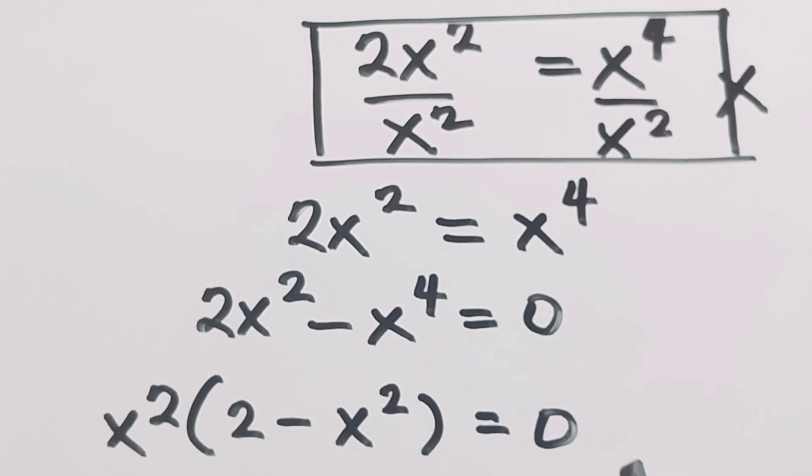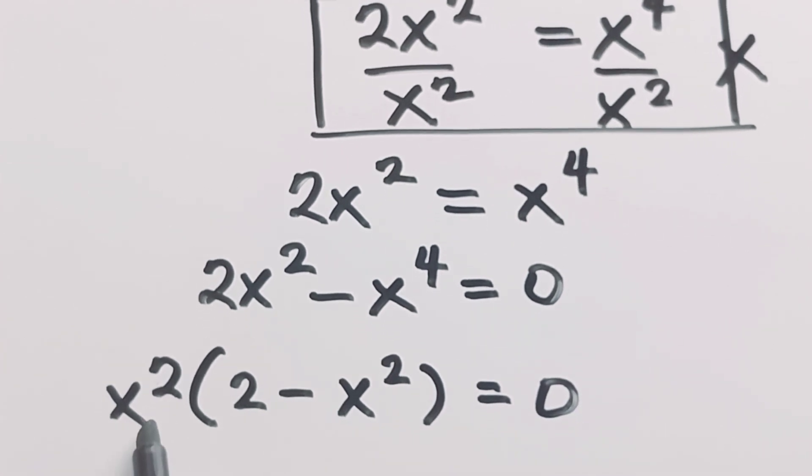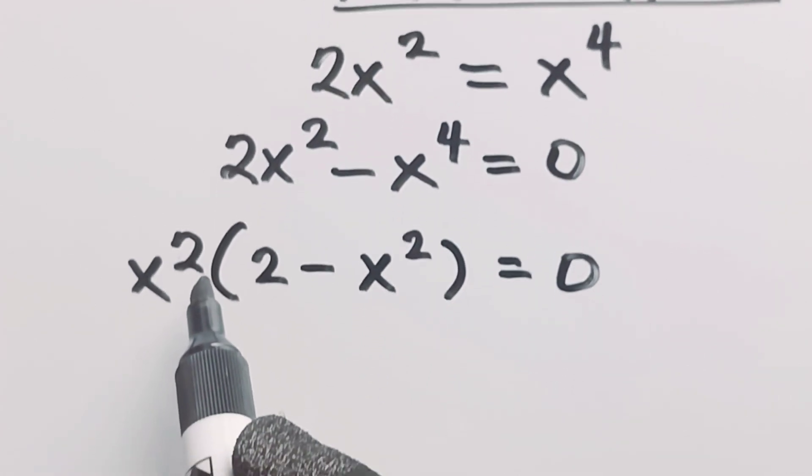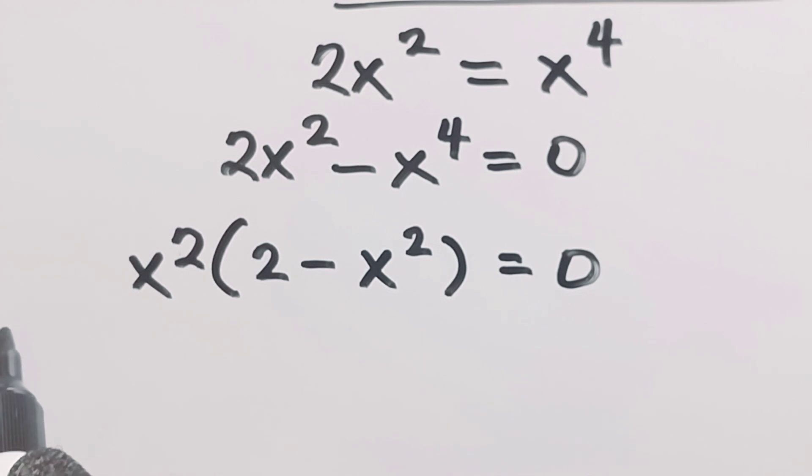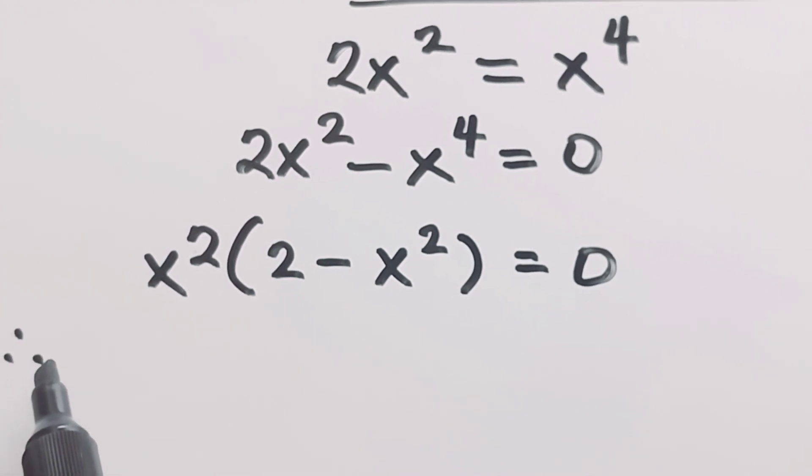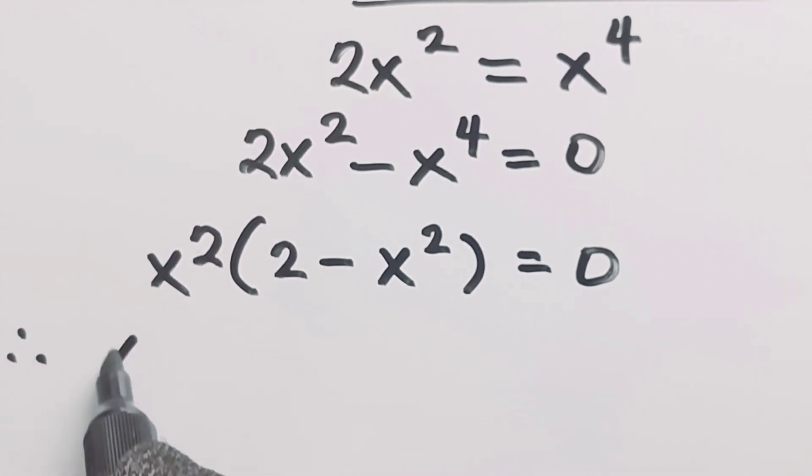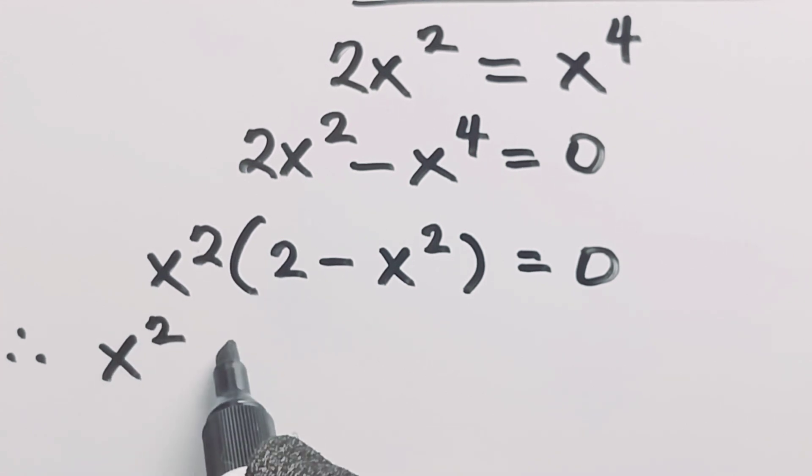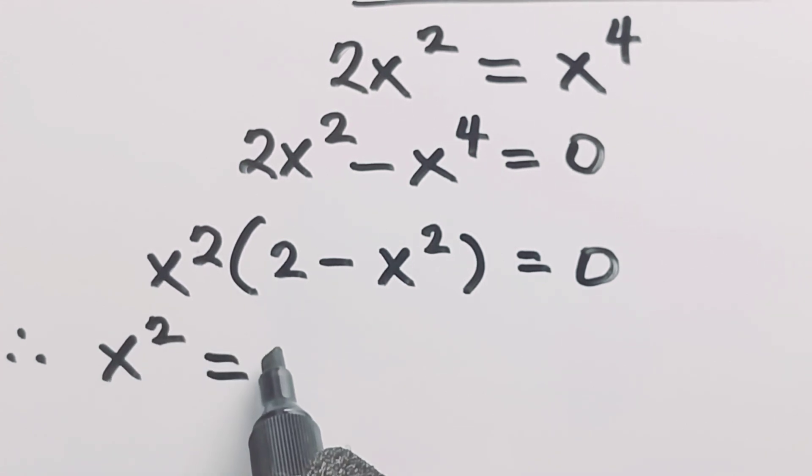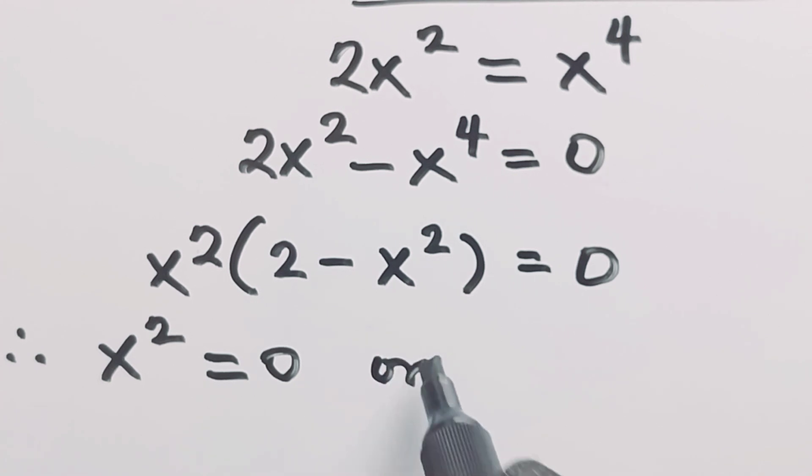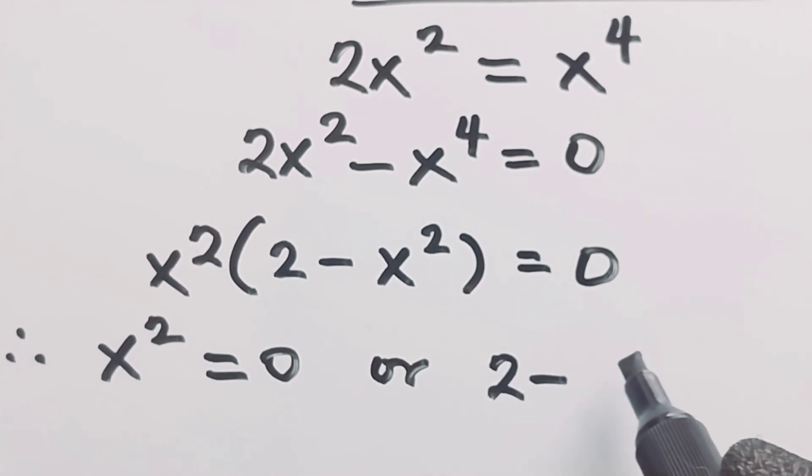So I'm almost done here. I can see a solution already. I can say therefore either x raised to power 2 equal to 0, or 2 minus x raised to power 2 is equal to 0. So we have our first solution here.